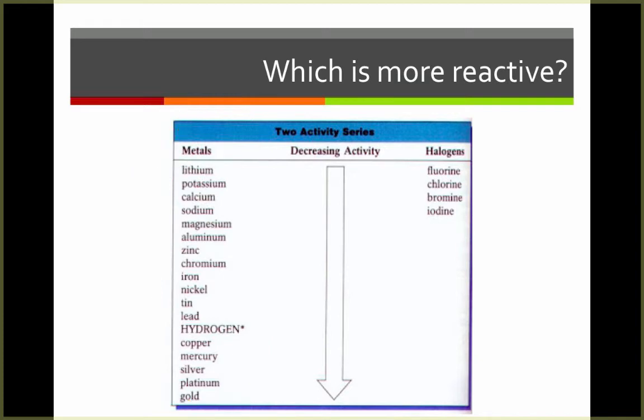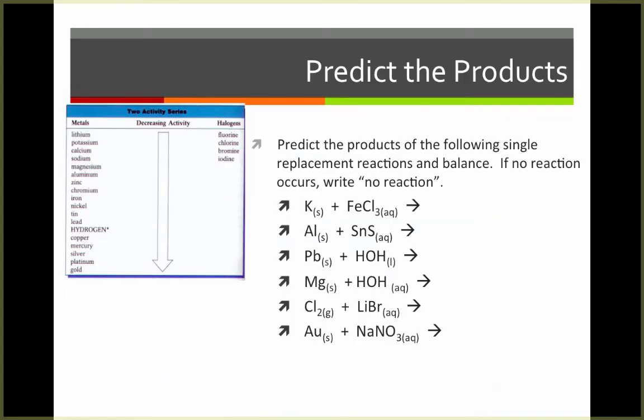If we're dealing with a halogen replacing halogen reaction, we can look at this side. Here we see that fluorine is the most reactive and can replace chlorine, bromine, and iodine, whereas iodine is the least reactive and can't replace anything above it. We can use the activity series to predict whether or not a reaction will happen, and from there we can predict products.